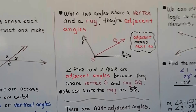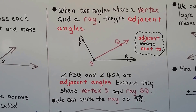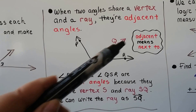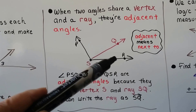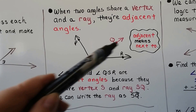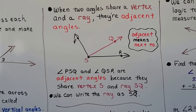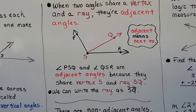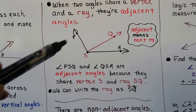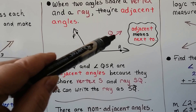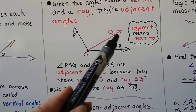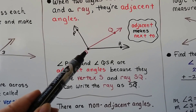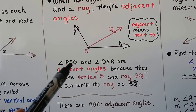When two angles share a vertex and a ray, they're adjacent angles — they're sharing this wall, like a neighbor in an apartment sharing the same wall. Adjacent means next to, so an adjacent angle is an angle that's next to another angle. This is angle PSQ and this is angle QSR. The vertex label letter is in the center when we name it: P-S-Q, Q-S-R — that tells us S is the vertex.